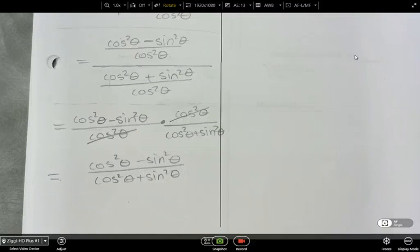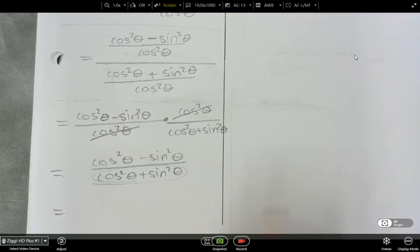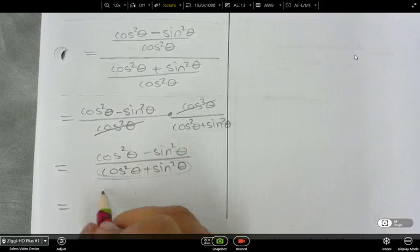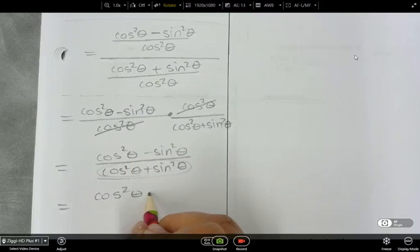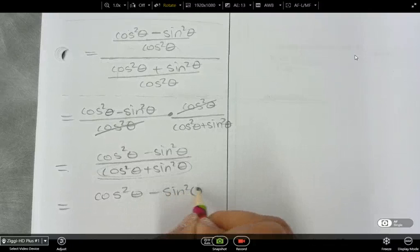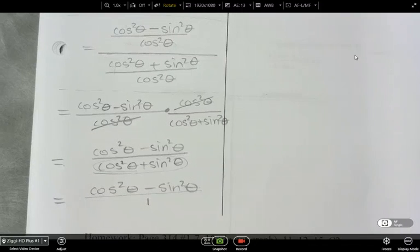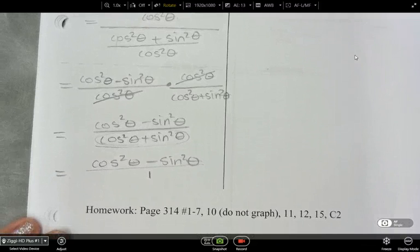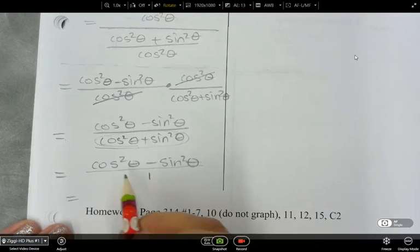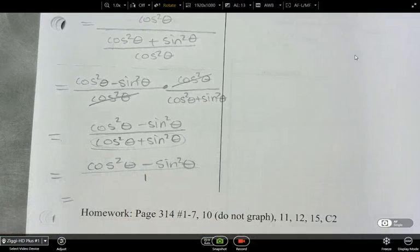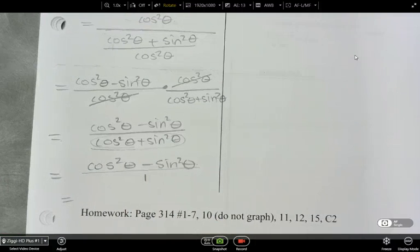What's an identity that you're seeing? So this denominator is equal to 1. And then I'm left with cos squared theta minus sine squared theta over 1, right? Is there an identity that we can use? Is there something that says cos squared theta minus sine squared theta on my sheet? How can I change that?